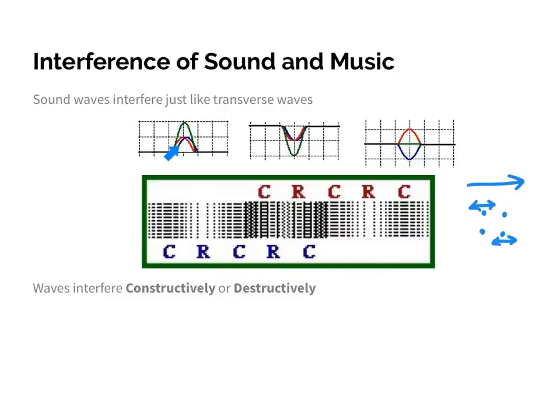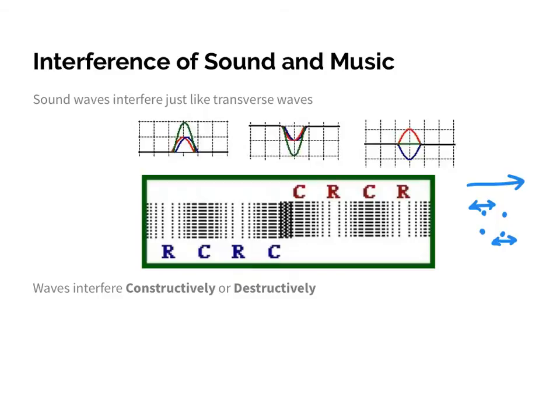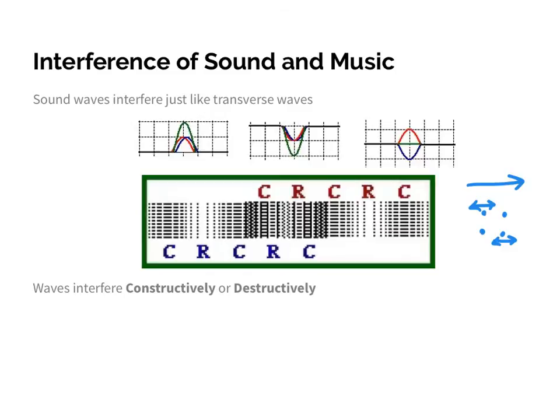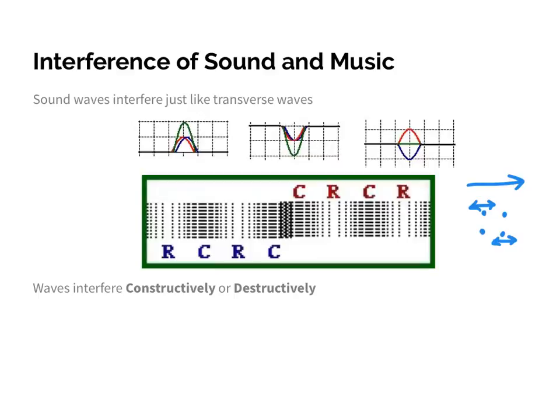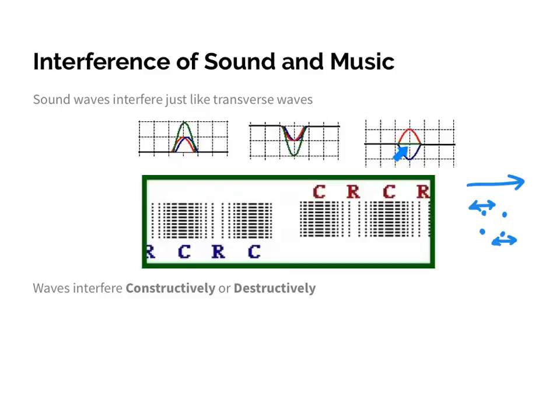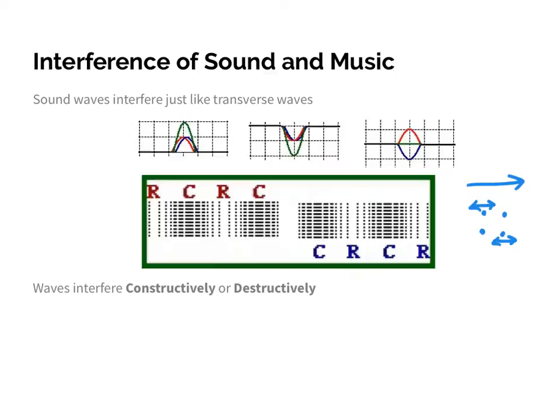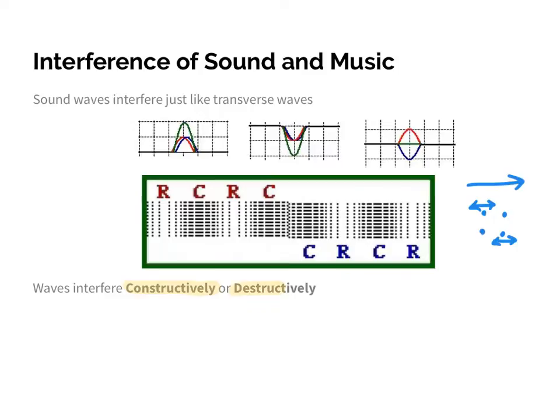When two compressions meet, you'll see the darker spots — they form a more intensified compression. When two rarefactions meet, it would be a more intensified rarefaction, meaning fewer particles in that space. With destructive interference, if a compression meets a rarefaction, they cancel each other out, and there would be no compression or rarefaction at that point — just the regular position. So sound waves can interfere constructively and destructively.